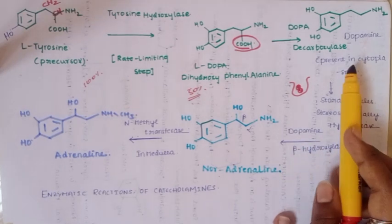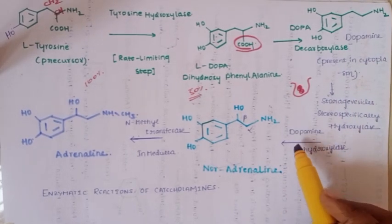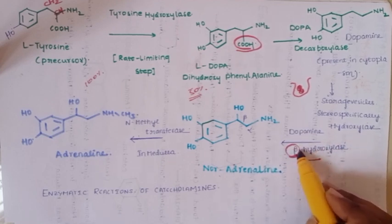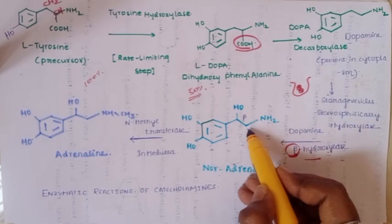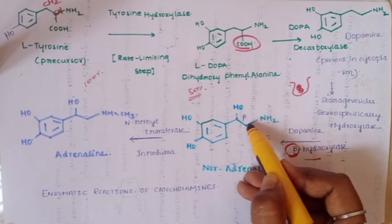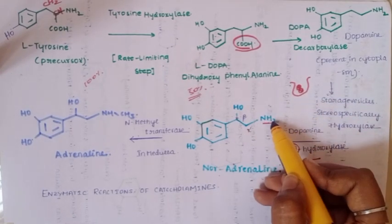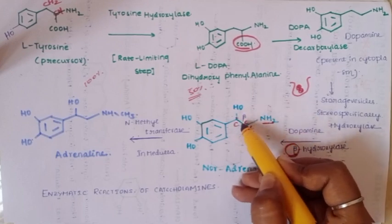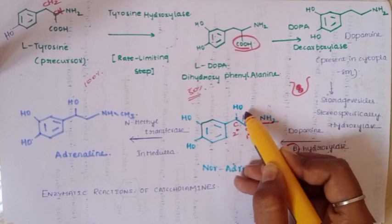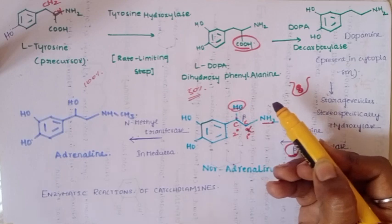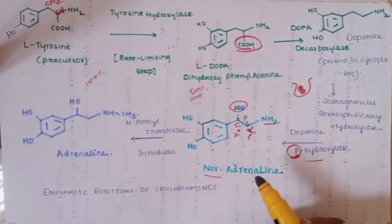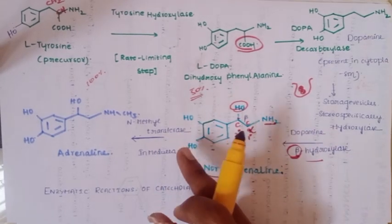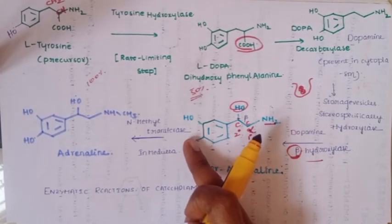Dopamine beta-hydroxylase then acts on dopamine and adds an OH group at the beta position to form noradrenaline. This reaction is stereospecific. In the adrenal medulla, N-methyl transferase is the enzyme used to convert noradrenaline to adrenaline.